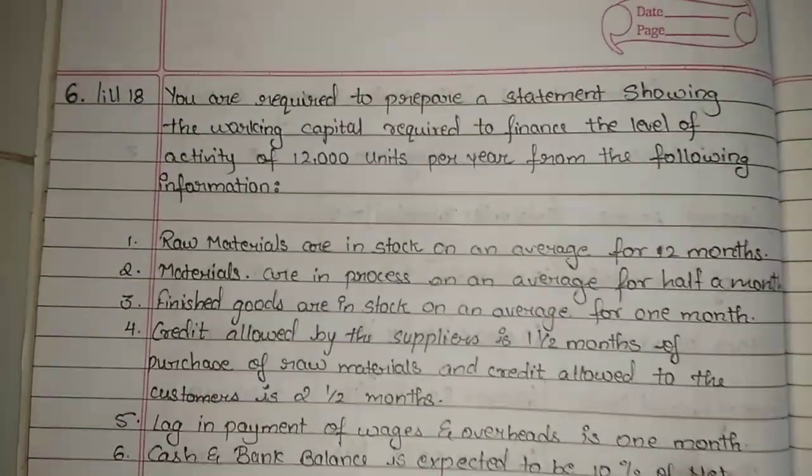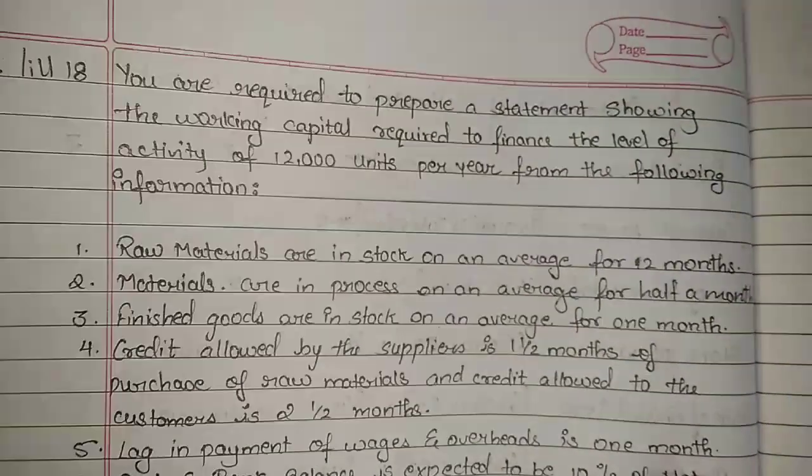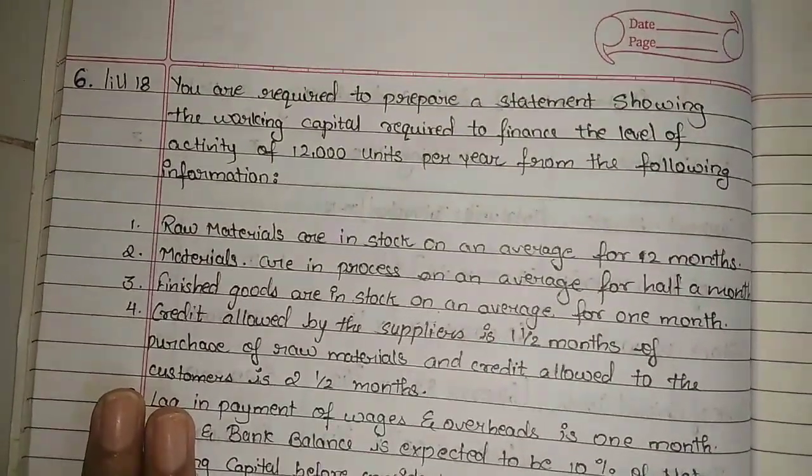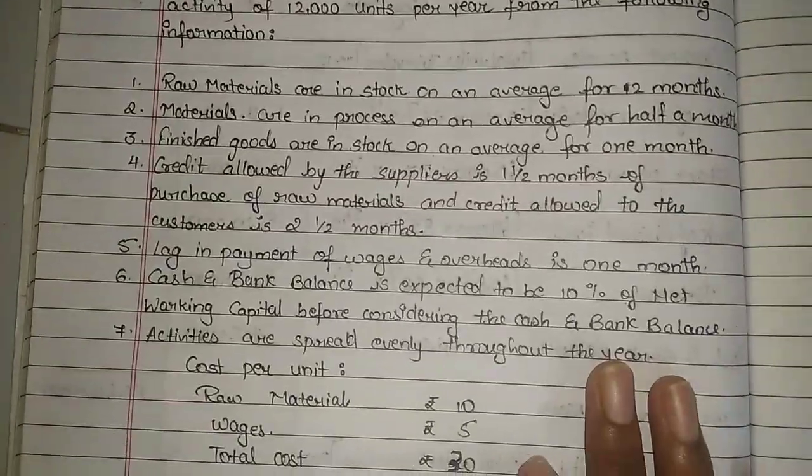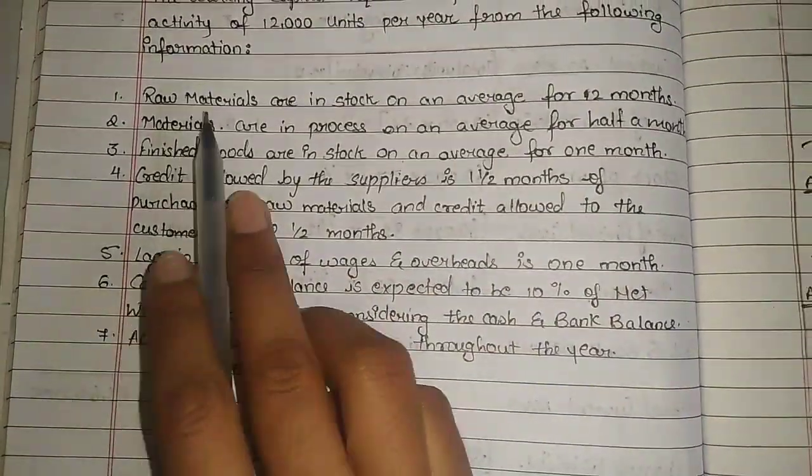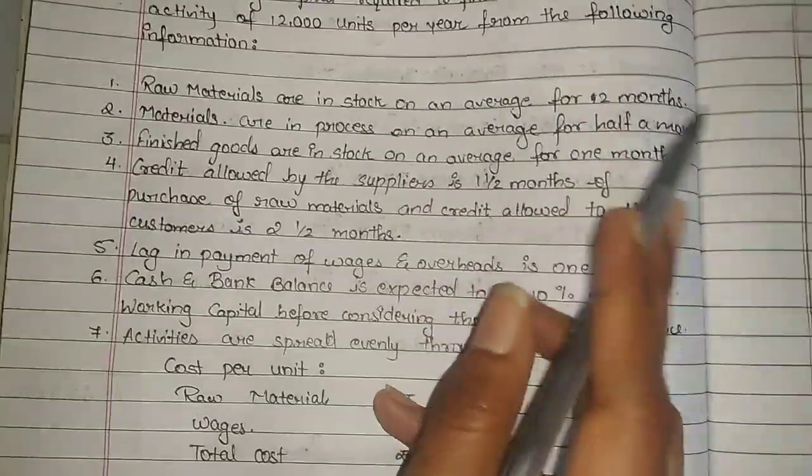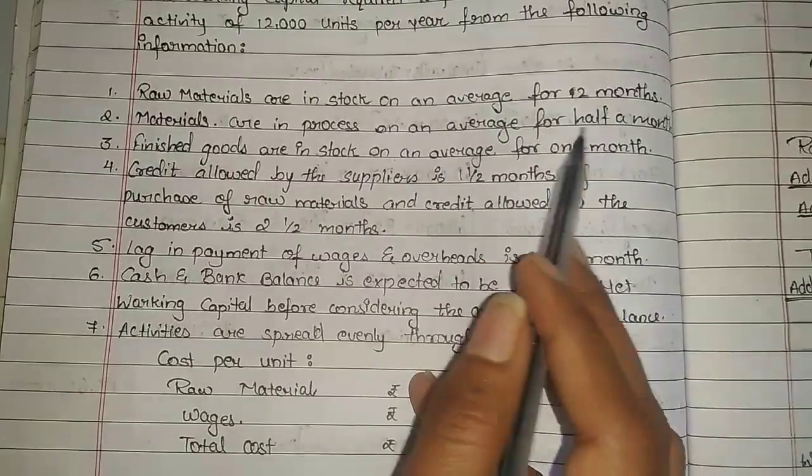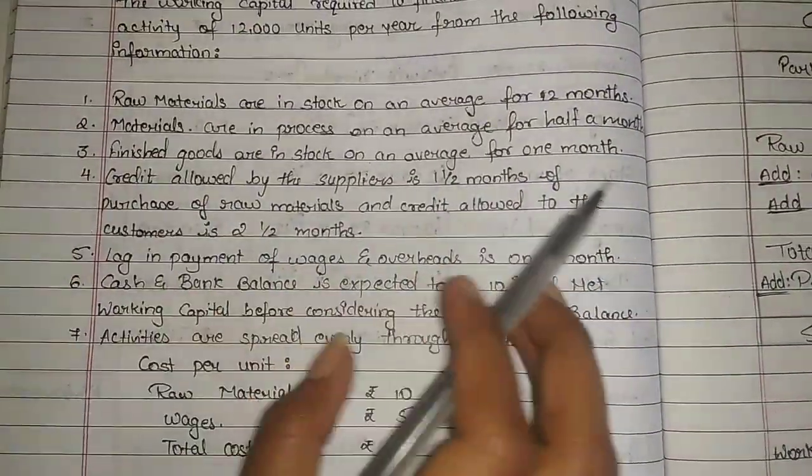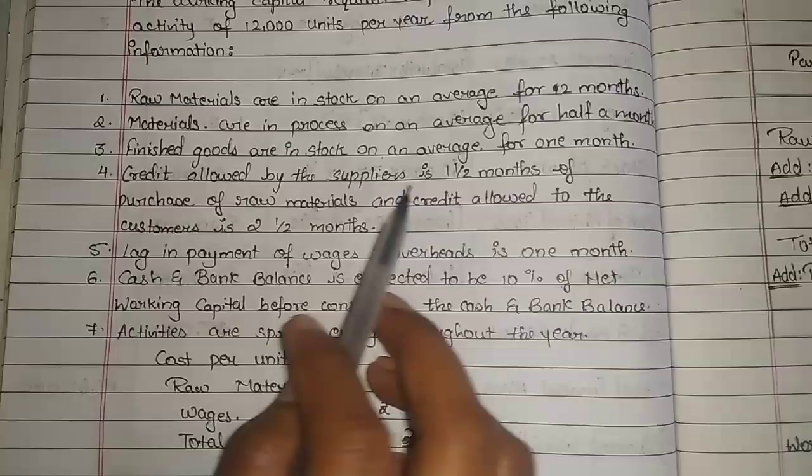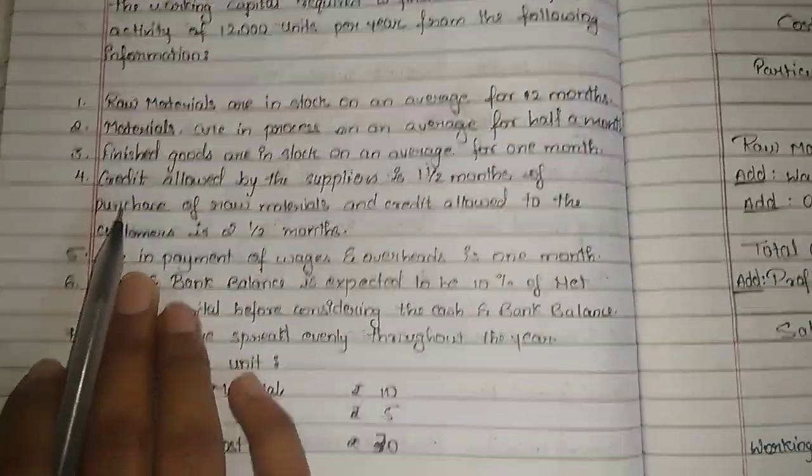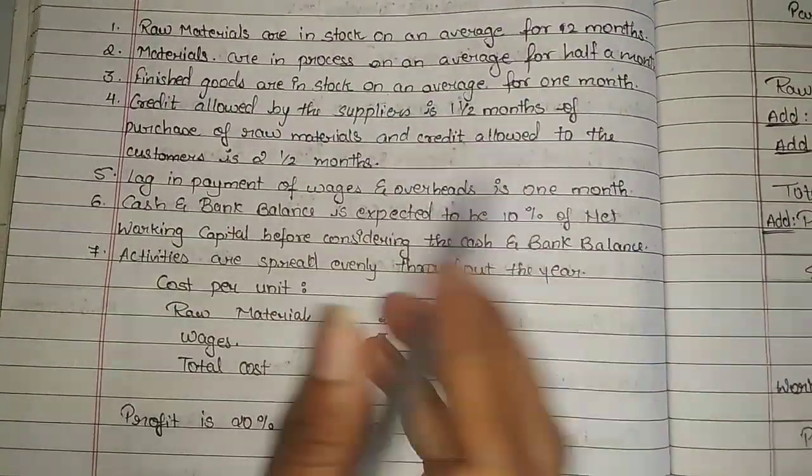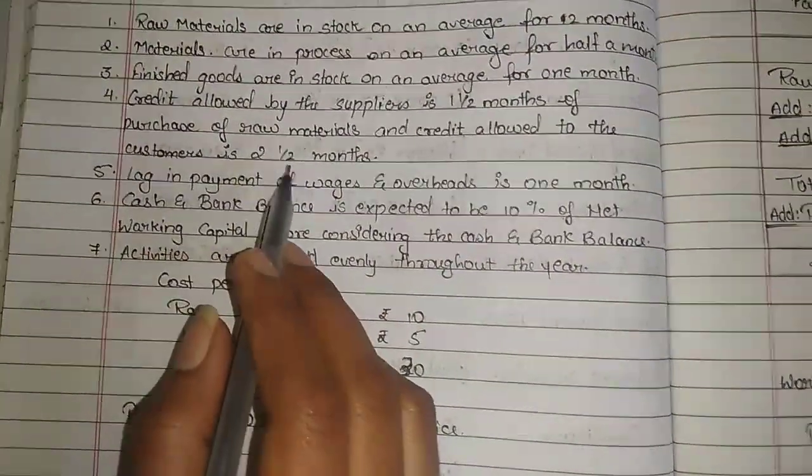You are required to prepare a statement showing the working capital required to finance the level of activities of 12,000 units per year from the following information. What they have given here: raw materials are in stock on an average of 2 months, materials are in process on an average of half a month 0.5, finished goods are for 1 month, credit allowed to suppliers that is our creditors 1 and a half month.